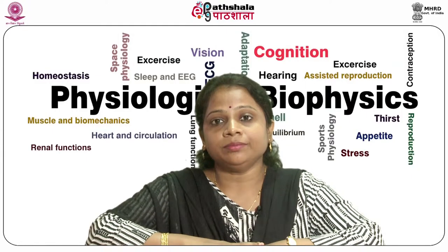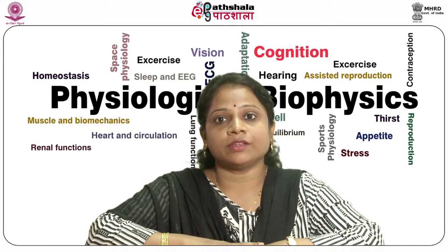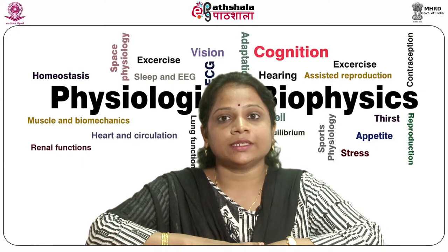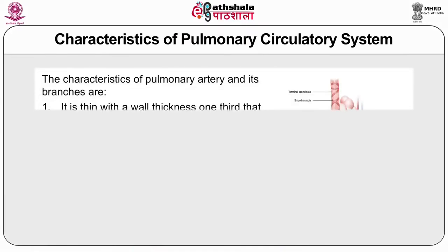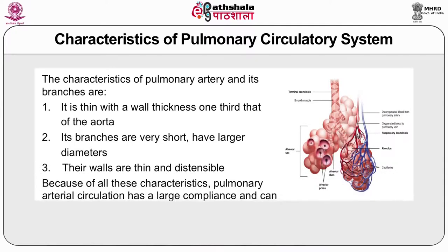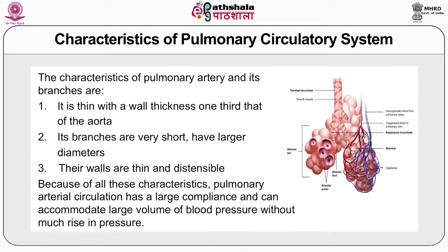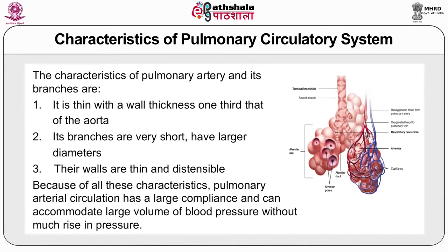The pulmonary artery receives blood from the right ventricle and its arterial branches carry blood to the alveolar capillaries for gas exchange. The pulmonary veins then return the blood to the left ventricle into systemic circulation. The characteristics of the pulmonary artery and its branches are: it is thin with a wall thickness only one third that of the aorta, and its branches are very short and have large diameter.